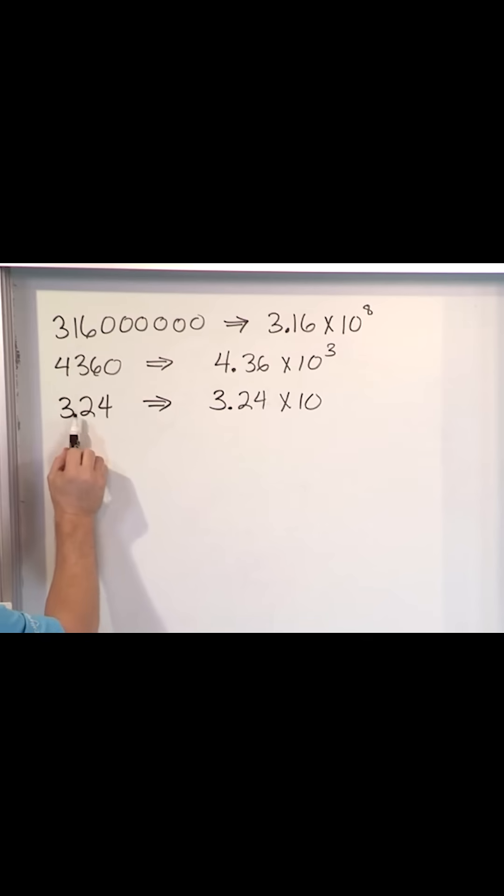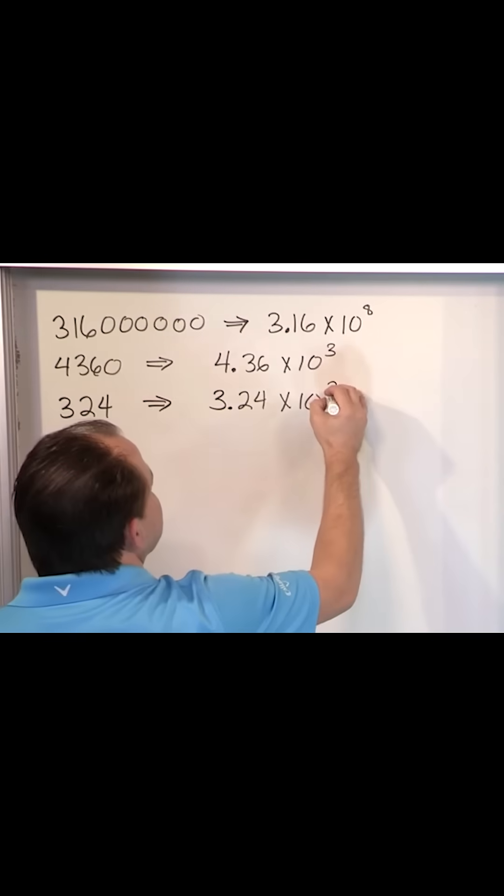How far do I go? I put the decimal here, then one, two. Because the decimal in all these numbers is after the end here. So it's times ten to the two.